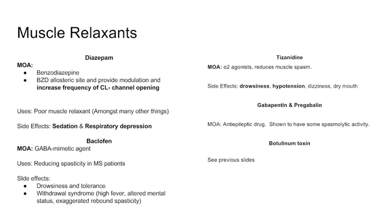Gabapentin and pregabalin are both anti-epileptic drugs with some spasmolytic activity — that's all I would know about them here. For most of these drugs, I'd focus on name recognition. For diazepam and baclofen, know a bit more: baclofen's use in MS spasticity and diazepam's effect on the chloride channel. Don't expect much to be asked on any of these drugs.